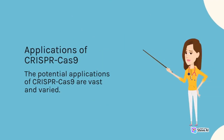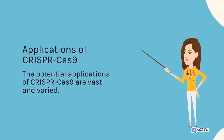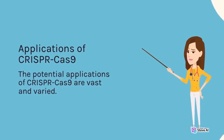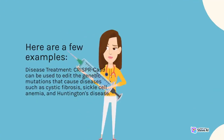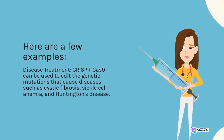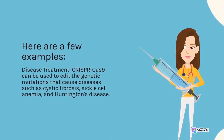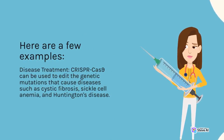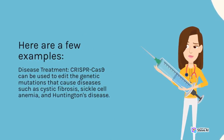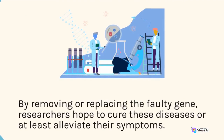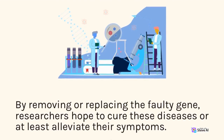The potential applications of CRISPR-Cas9 are vast and varied. In disease treatment, CRISPR-Cas9 can be used to edit the genetic mutations that cause diseases such as cystic fibrosis, sickle cell anemia, and Huntington's disease. By removing or replacing the faulty gene, researchers hope to cure these diseases or at least alleviate their symptoms.